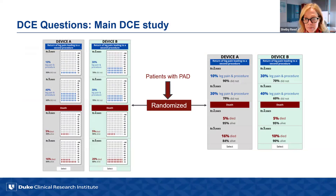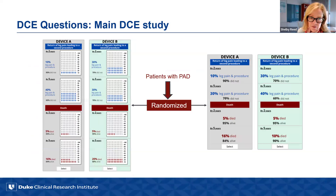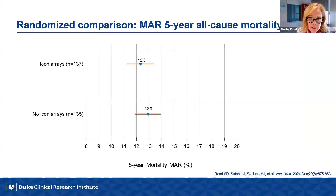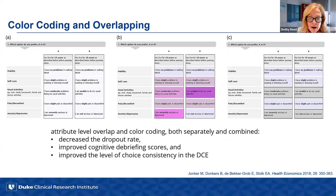In our main DCE study, we ended up randomizing people between what we thought was representative of our more standard format — modified for mobile phone use — and the version without the icon arrays. The results showed that there was not a significant difference in our estimates of maximum acceptable risk of five-year mortality when we included or did not include the icon arrays.